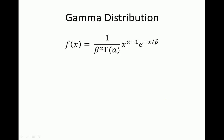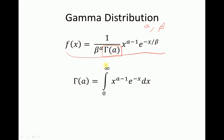The probability density function for the gamma distribution has parameters alpha and beta, and in the denominator we have the gamma function, which is an integral from 0 to infinity of x to the power of alpha minus 1 times e to the power of minus x dx. The proof will be for this gamma function, which we use in the PDF of the gamma distribution.